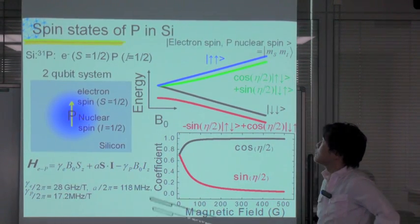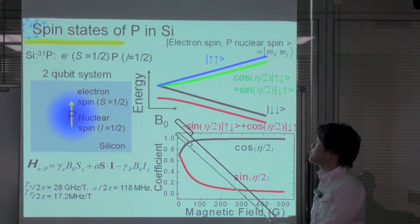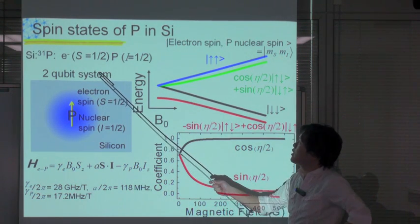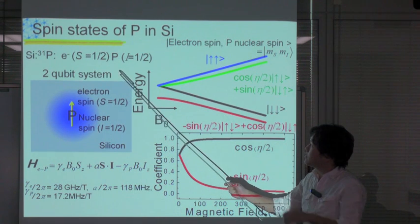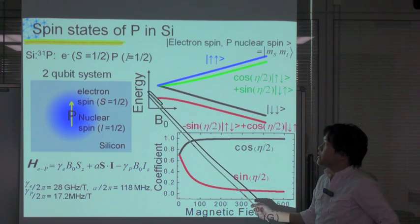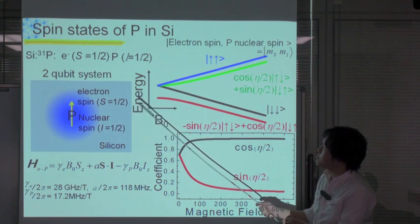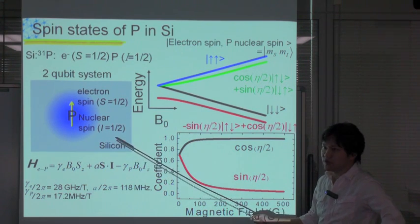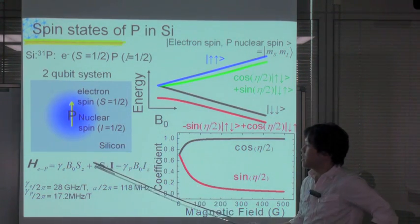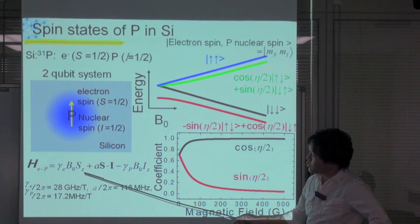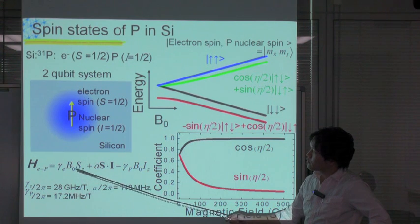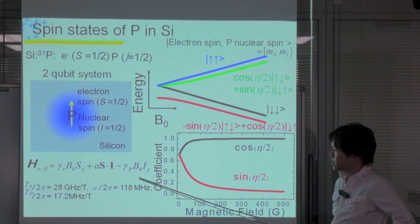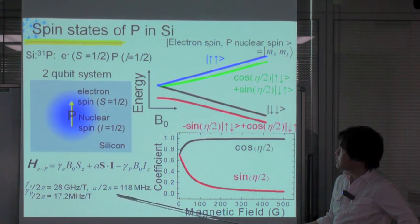Next is the spin state of phosphorous in silicon under the external magnetic field. Phosphorous in silicon has one electron spin with spin one half and one nuclear spin with spin one half. It is a very promising candidate for a two-quantum-bit system, and the electron bound by phosphorous has an S-like wave function. Therefore, the spin Hamiltonian for phosphorous in silicon is described by these equations, composed as a sum of electron Zeeman energy, hyperfine interaction between electron and nuclear spins, and nuclear Zeeman energies. The values of these coefficients are indicated here.